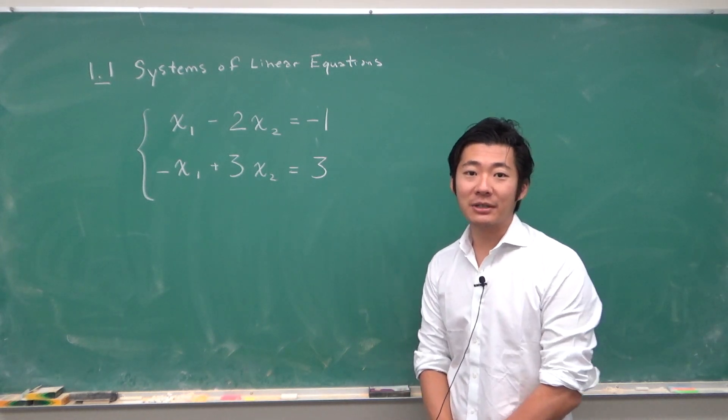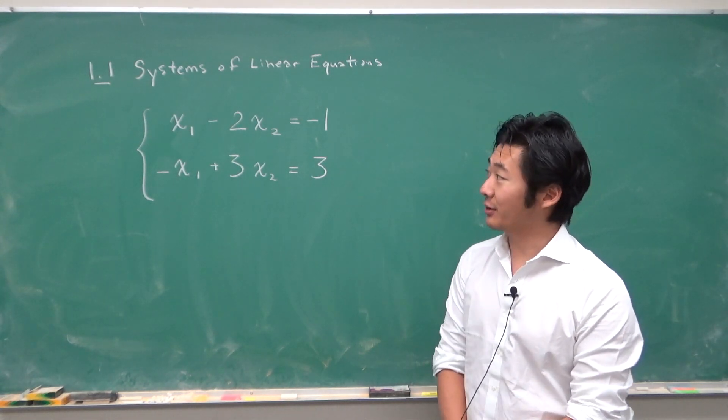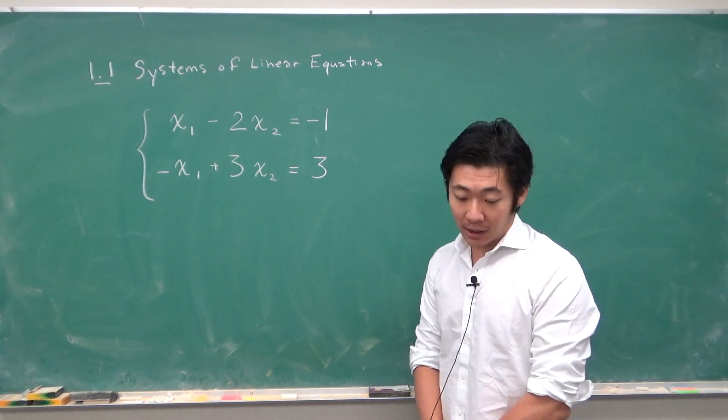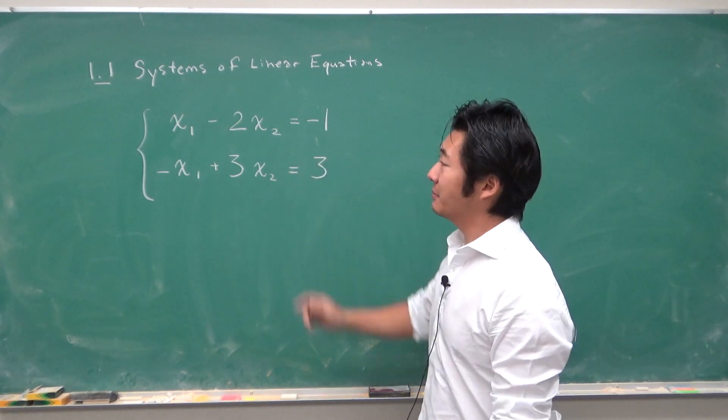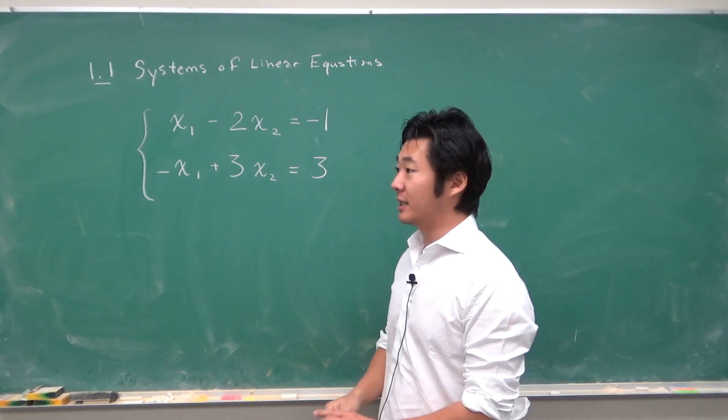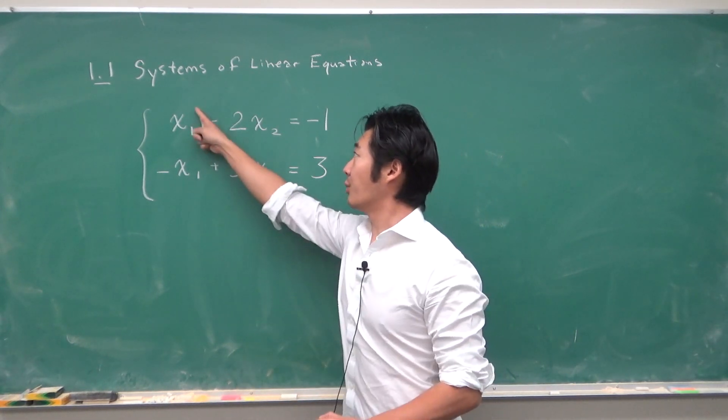Hello everyone. In this video I will talk about the systems of linear equations. So a linear equation is first of all an equation but every variable is linear. That means the power is one.